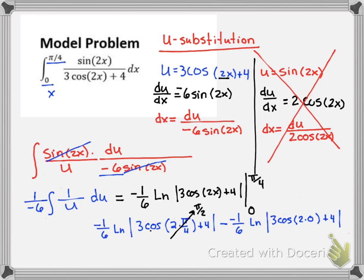So this first term becomes negative 1/6 ln of 4 plus 1/6 ln. Well here we have cosine of 0 is 1, 3 times 1 is 3, plus 4 is 7. Hopefully this is looking a lot like it looked last time.